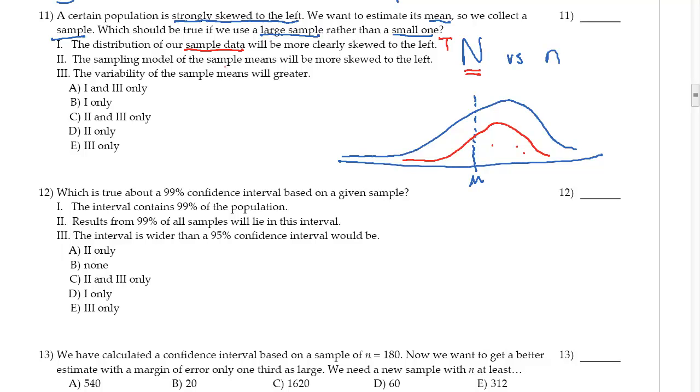The sampling model of the sample means will be more skewed to the left. Now this is an issue. Because what happens is if I start sampling means, and here's where the center of the population is, I'm going to get means that are here, and actually here, and here, and here. And as I sample a bunch of means, what happens is the central limit theorem kicks in, and I actually get a normal model. So 2 is not going to be right.